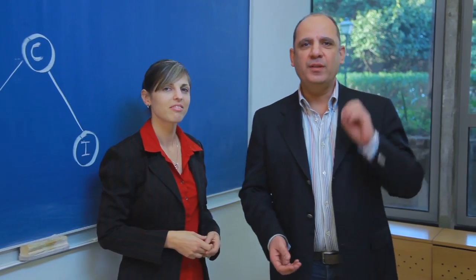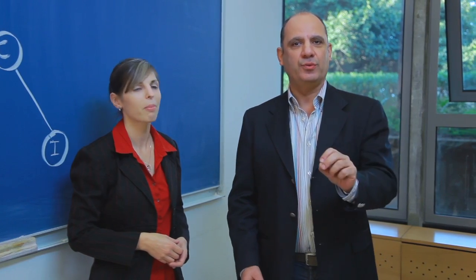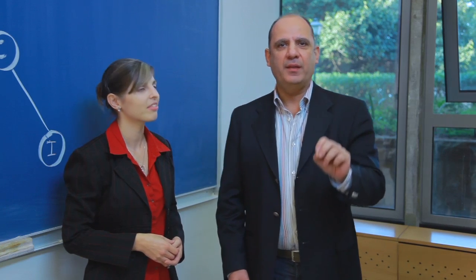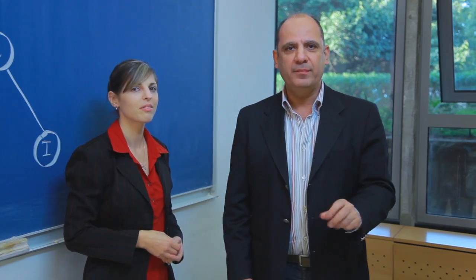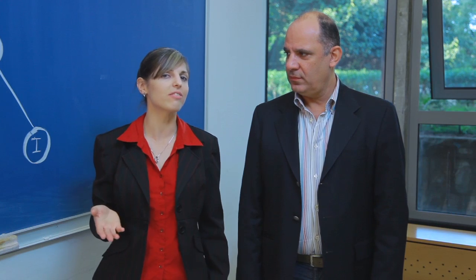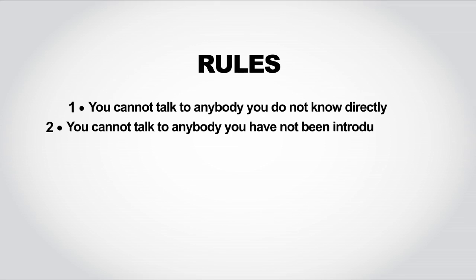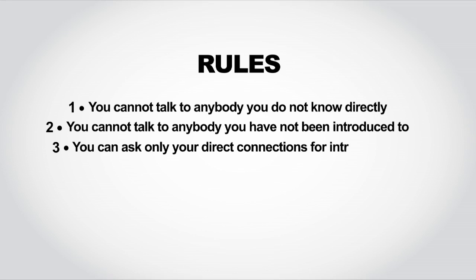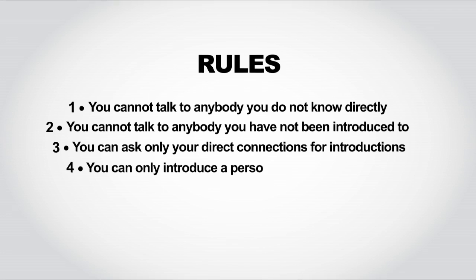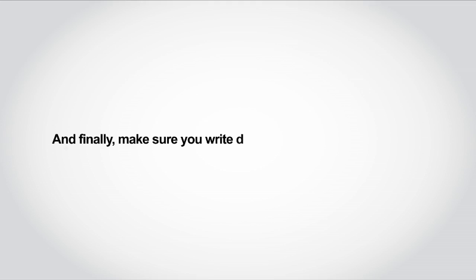Let's imagine you're at a party and you're interested in meeting someone you do not know. The way to get to know them is to have one of their friends introduce you. So how would you go about finding the person to introduce you in the least amount of time? Your instructor will give you a piece of paper saying who you know in your classroom and who your target person is. You then need to find the right introductions following these rules: You cannot talk to anybody you do not know directly. You cannot talk to anybody you have not been introduced to. You can ask your direct connections for introductions. You can only introduce a person to one of your direct connections, but you get to choose which one. Be sure to write down the introductions that you need.